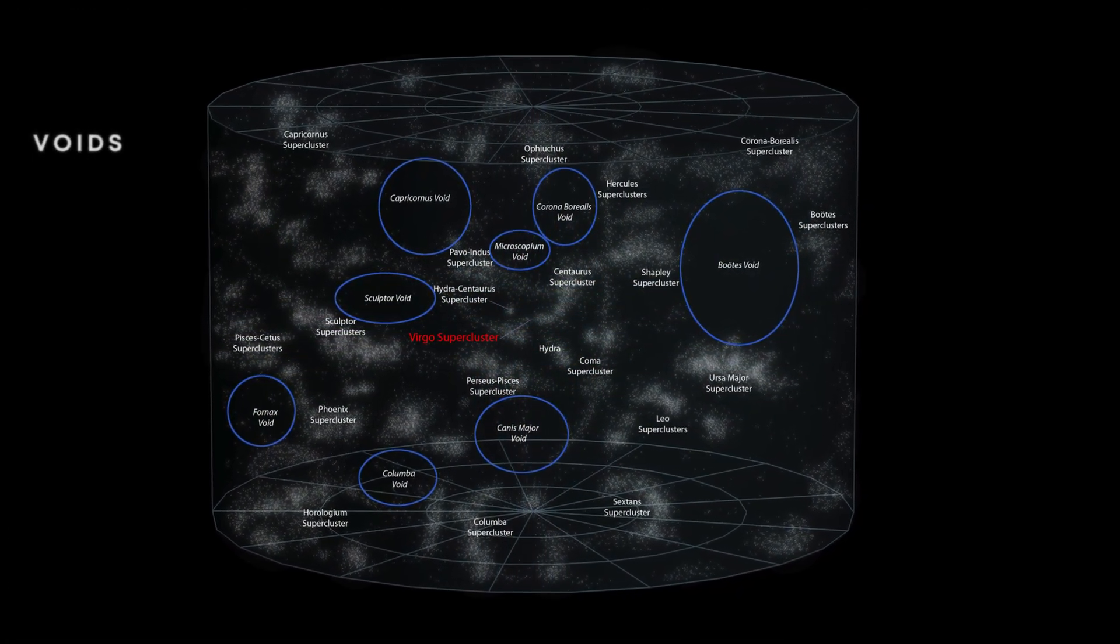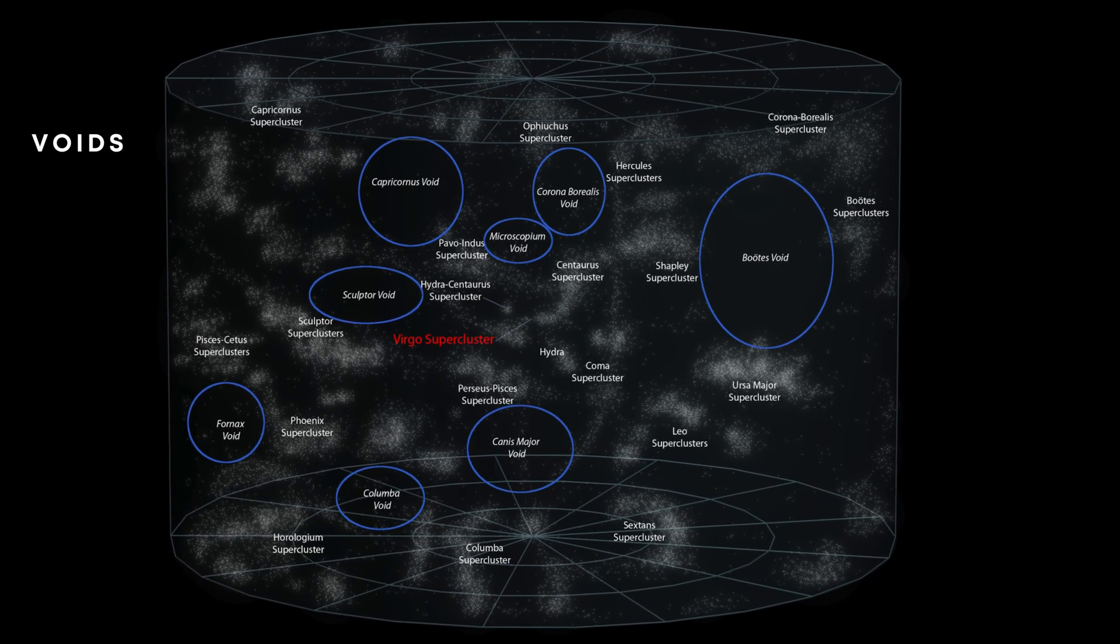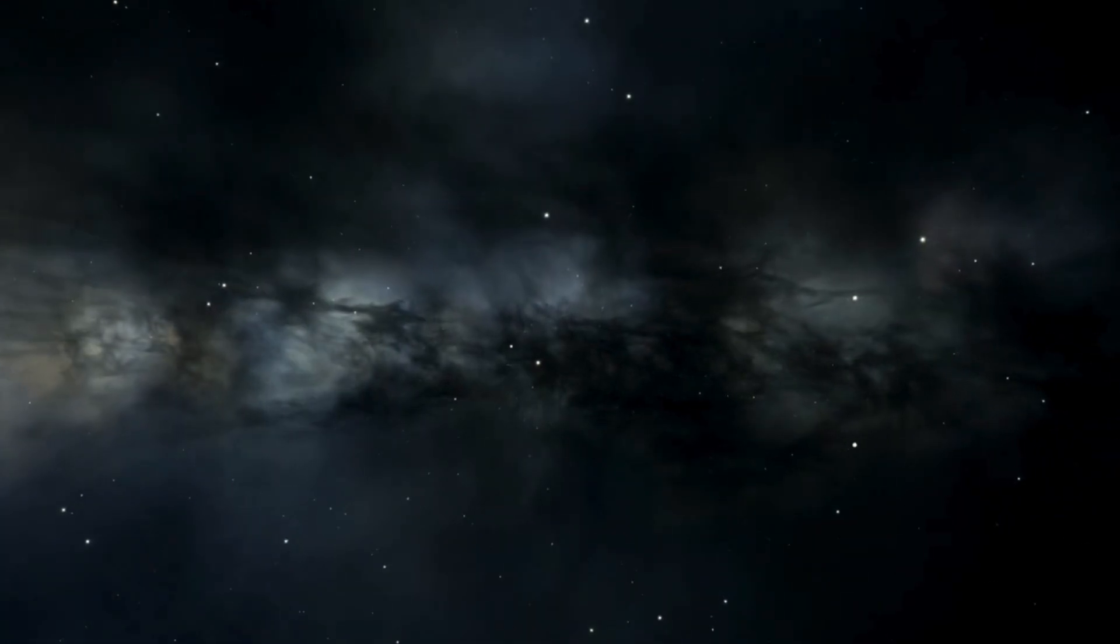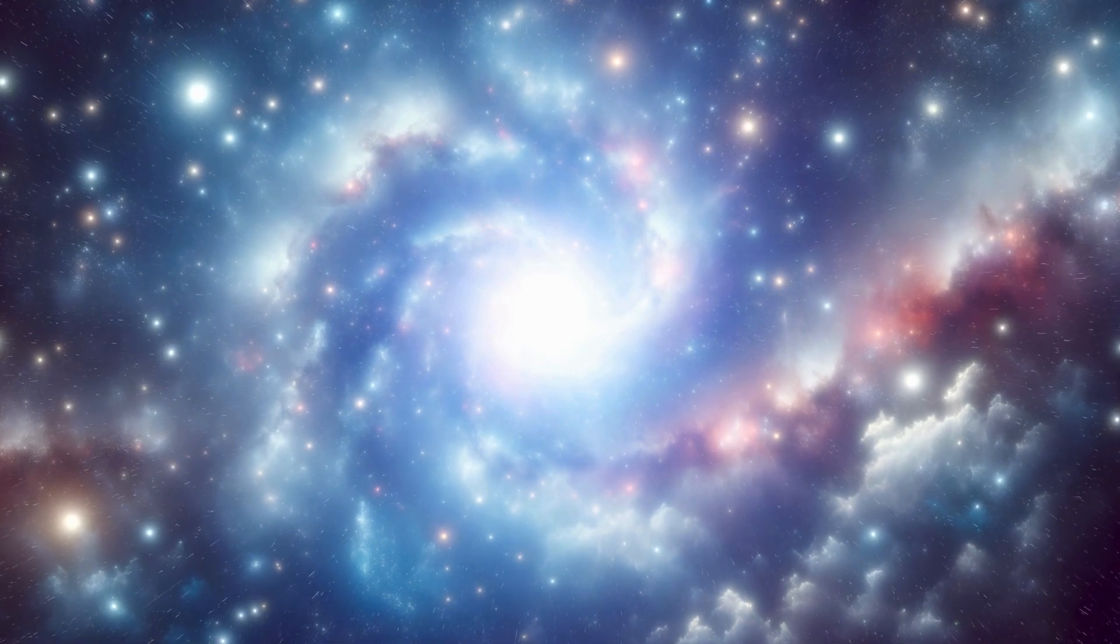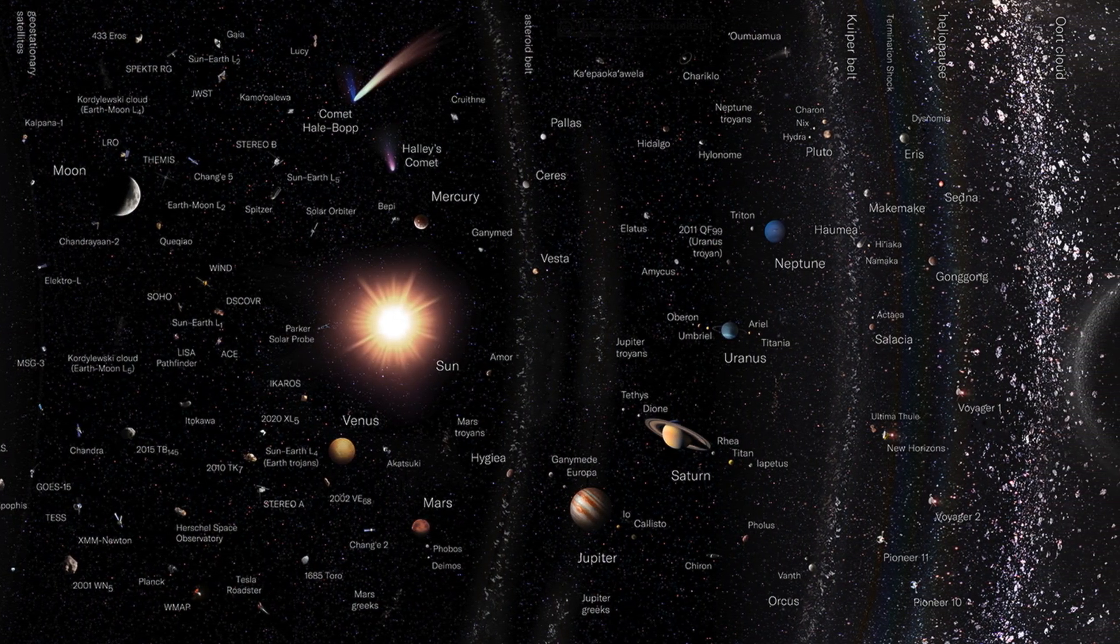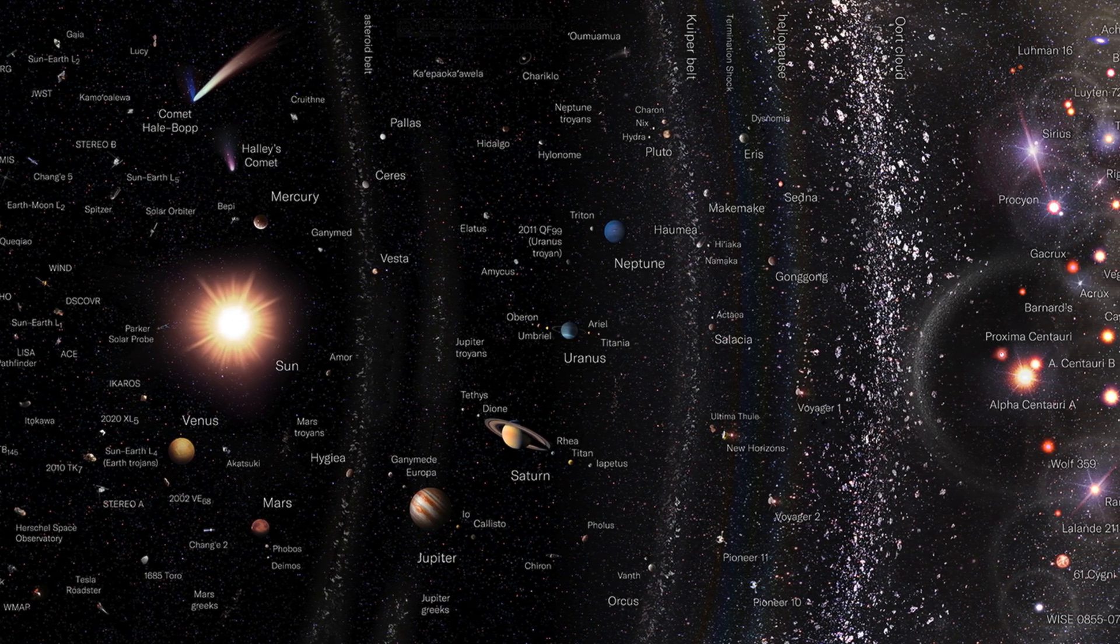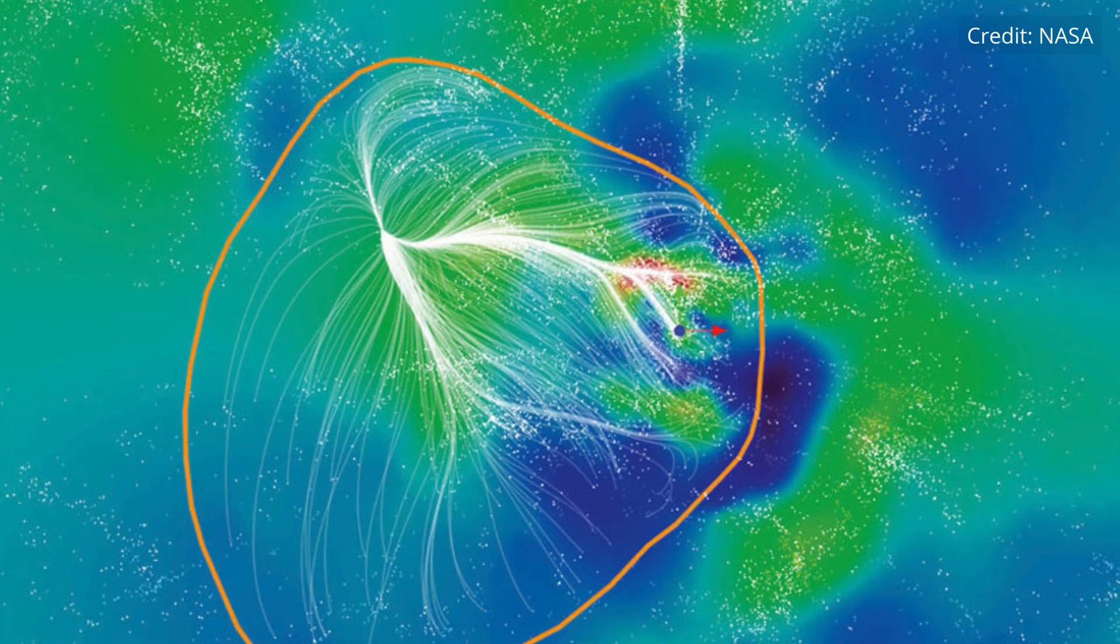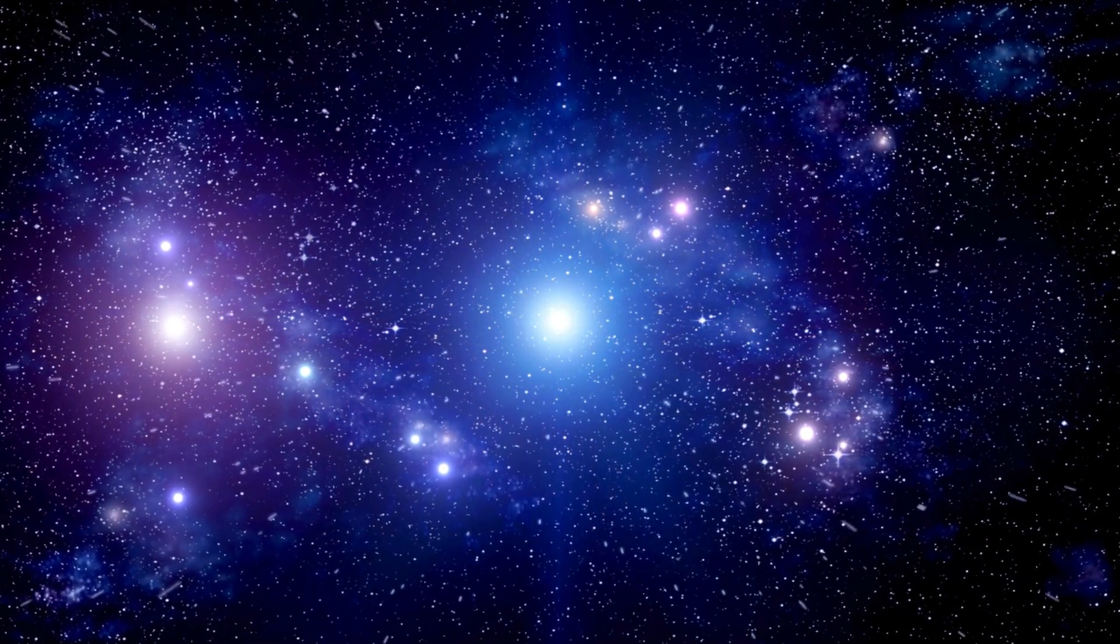The spaces between these filaments are called voids, which are regions having a minimal number of galaxies. Studying the large-scale structure of the universe helps us explain the forces that shaped it and the processes that govern its development. As we chart the cosmos, we are slowly tracing the grand tapestry of the universe, a layout that is both breathtaking and colossal. From the local group to the farthest superclusters, the scale of the universe continues to inspire awe and wonder.